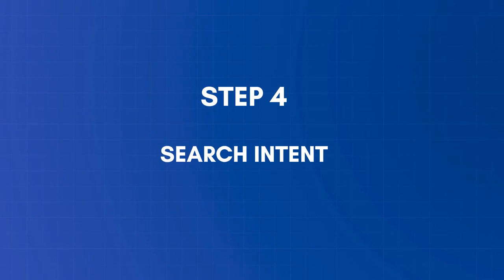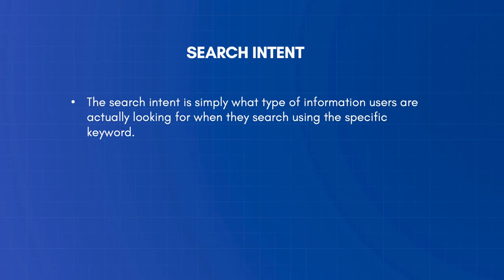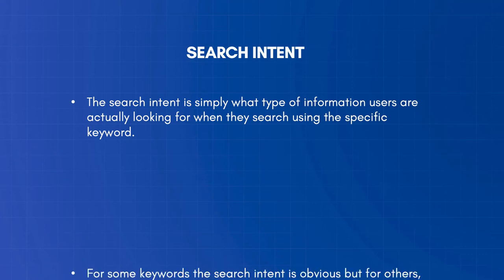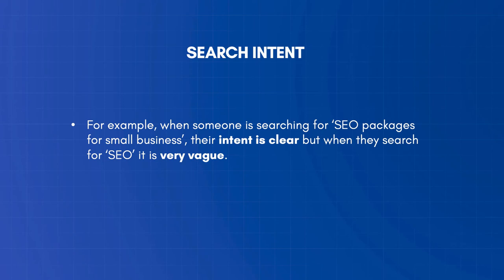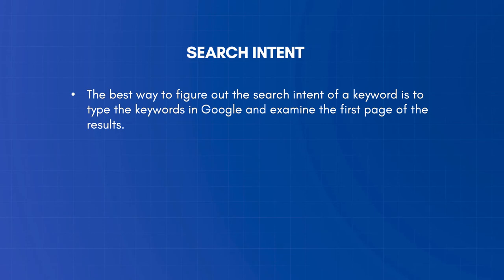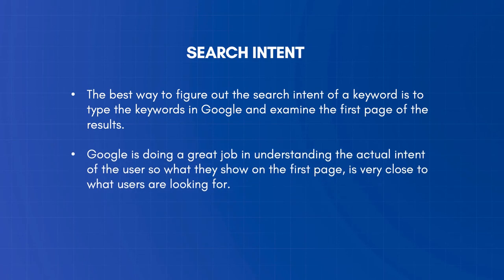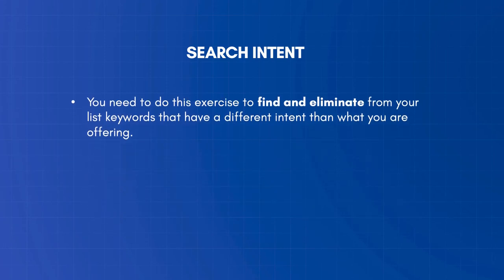Step 4: Examine the search intent of each keyword. Now that you have a list of seed keywords, it's time to examine each keyword's search intent — simply the type of information users are looking for when they perform a search. For some keywords the search intent is obvious, but for others it needs more investigation. For example, searching for 'SEO packages for small businesses' has a clear intent, but searching for 'SEO' is very vague. The best way to figure out search intent is to type the keyword in Google and examine the first page of results, as Google does a great job understanding the user's actual intent.